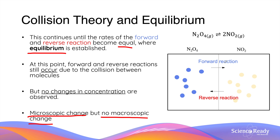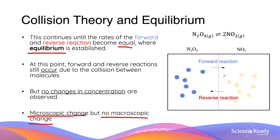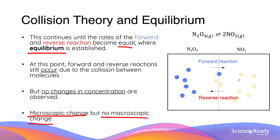This animation illustrates that idea: as one molecule of N2O4 undergoes the forward reaction it produces two molecules of NO2, but at the same time two molecules of NO2 undergo the reverse reaction to reproduce one molecule of N2O4. So even though molecules are moving back and forth, there is no net change in the total amount of each product and reactant.